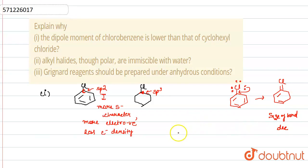And we know that dipole moment depends upon charge times bond length. So, due to both reasons, as charge is also less and bond length is also less, that's why dipole moment of chlorobenzene is lower than that of cyclohexyl chloride.